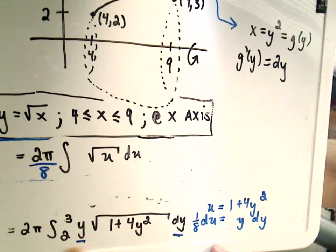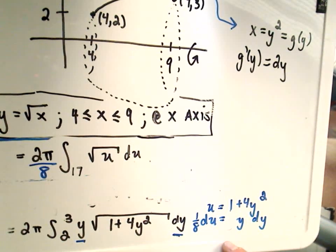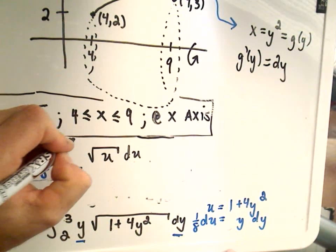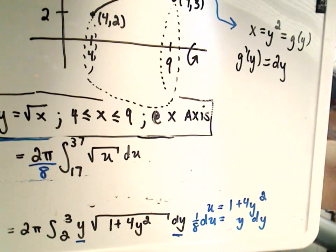So the original lower limit was when y equals 2. If I plug y equals 2 into my substitution, I'll get 2 squared, which is 4. 4 times 4 is 16, plus 1 is 17. If you plug in 3, we'll get 3 squared, which is 9, times 4, which is 36 plus 1, or 37. And if you saw part 1 of this video, this integral should probably start looking pretty familiar at this point.